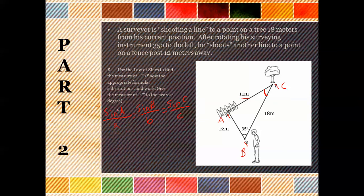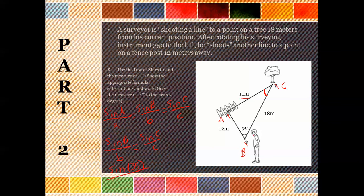We have 35 degrees, which is angle B, so we know we're going to use sinB/b. It wants us to find the measure of angle T, which we've renamed C, so we use sinC/c. We plug in: sinB is sine of 35, and side B is 11. Sine C we don't know, so we write sine C, and the opposite side c is 12. We cross-multiply: 12 times sine 35 equals 11 times sine C.